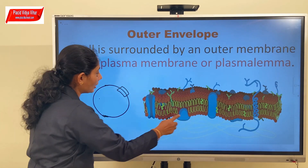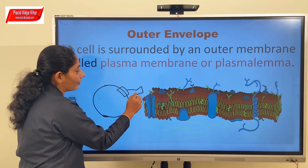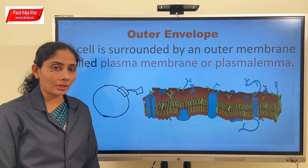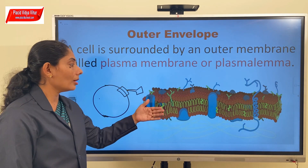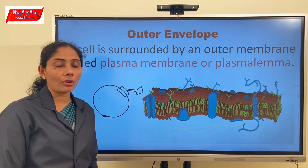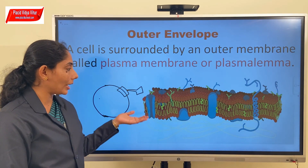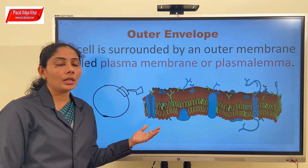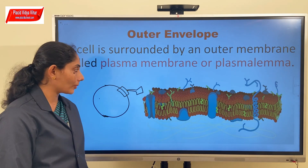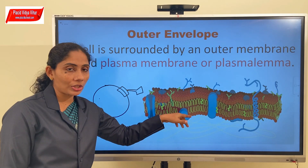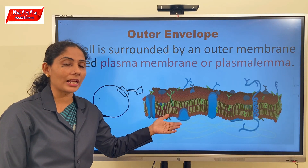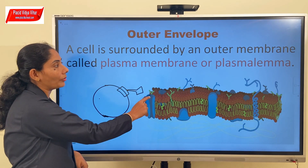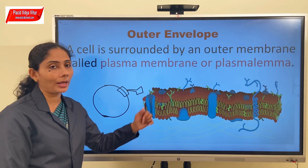This picture that you see here on the screen is the magnified image of the plasma membrane. This image could be learned only after the invention of the electron microscope. So this is actually an electron microscopic picture of the plasma membrane which we can't see under a simple compound microscope. This is how a plasma membrane looks like. Every cell will be surrounded by a plasma membrane.